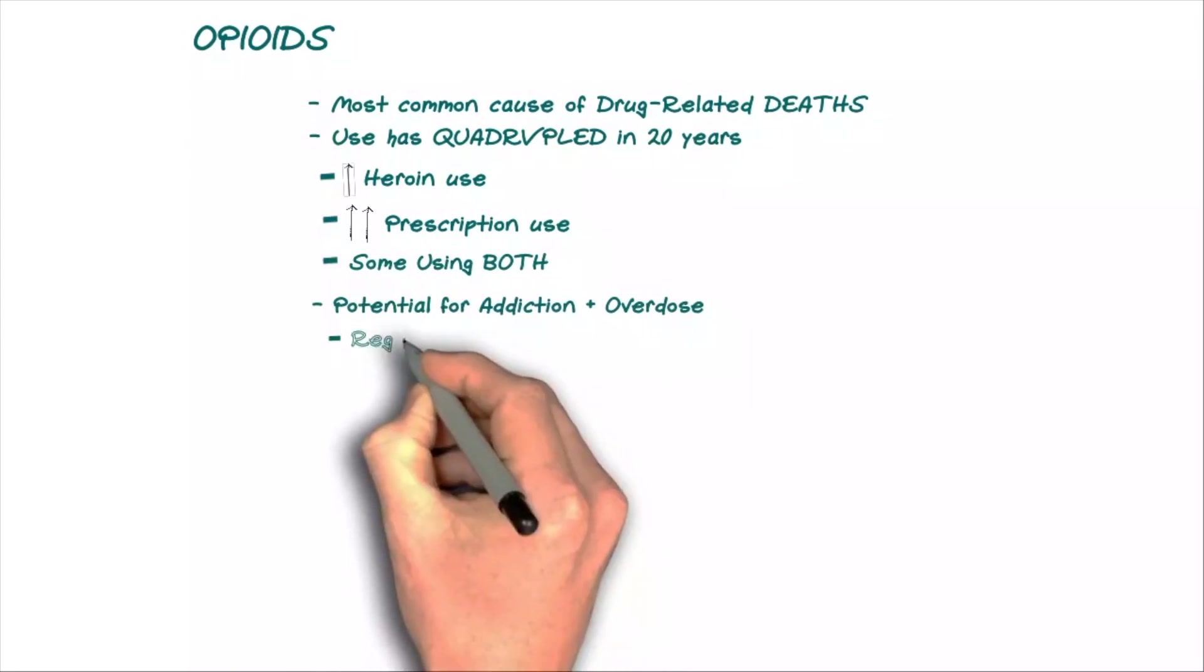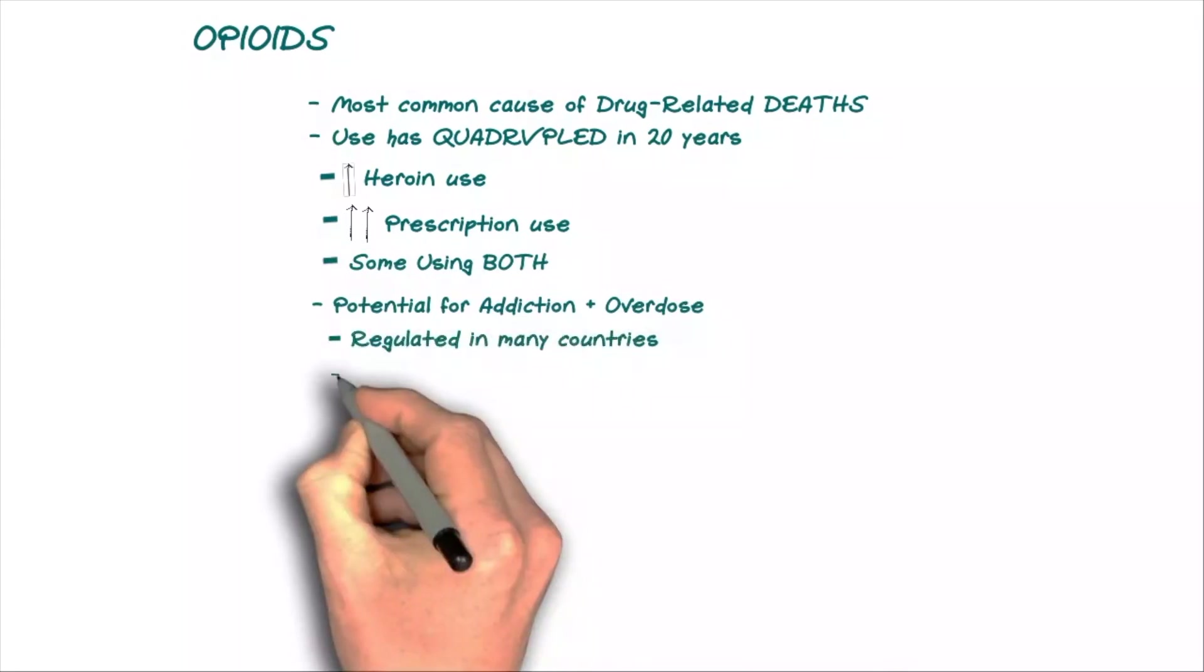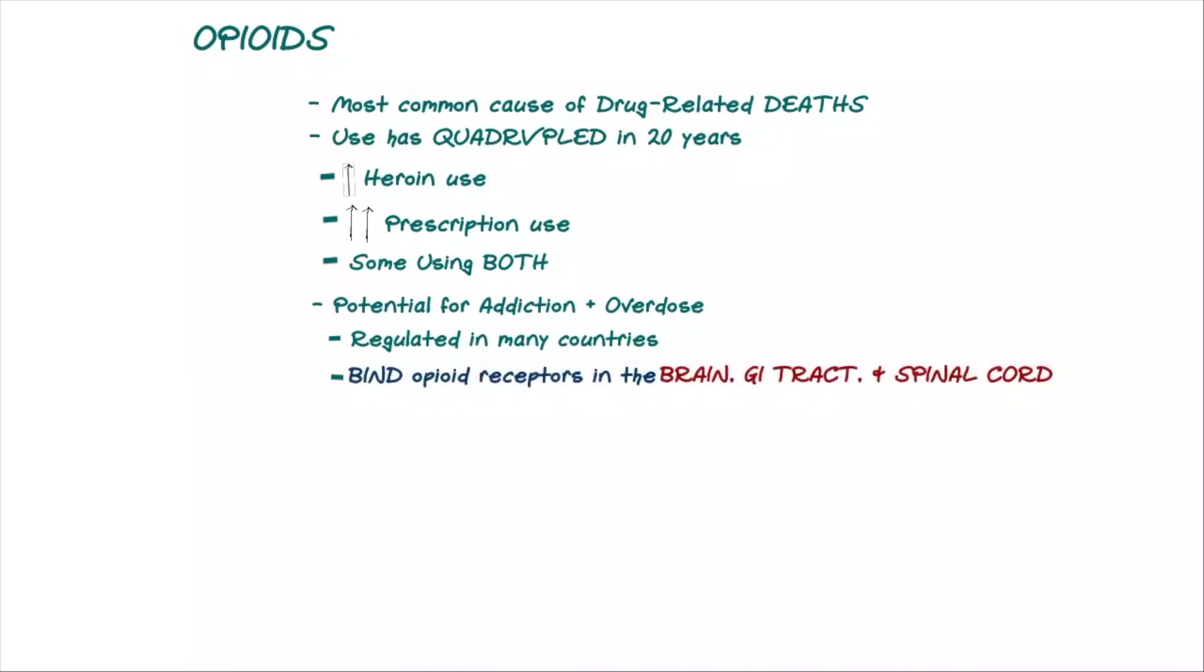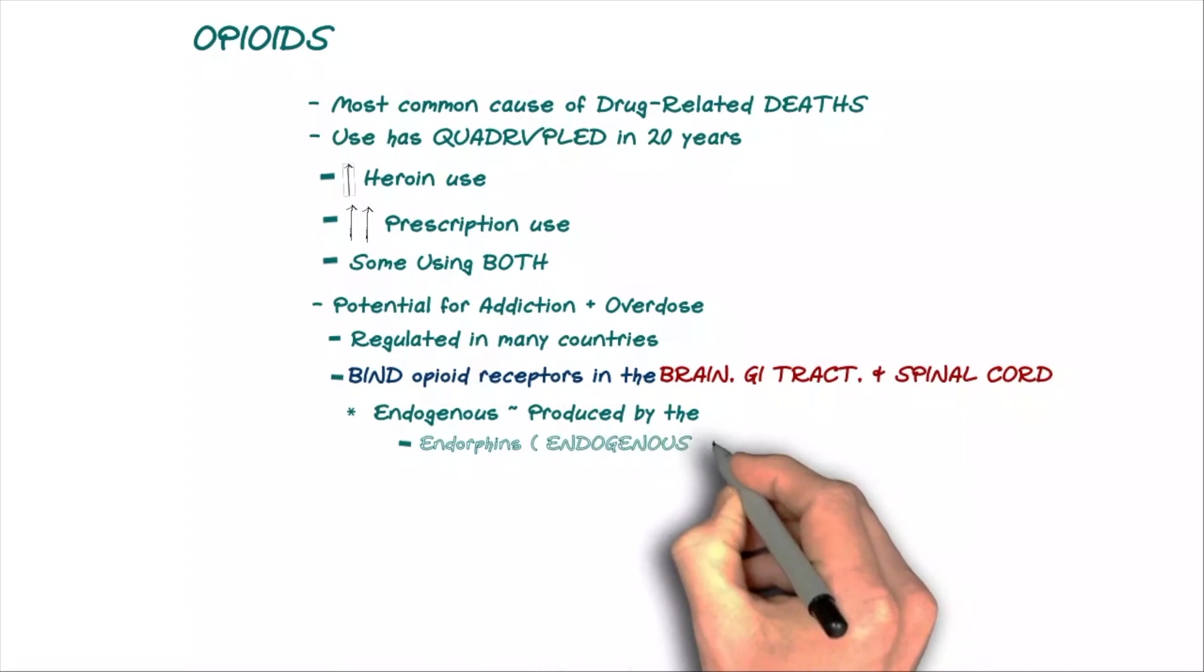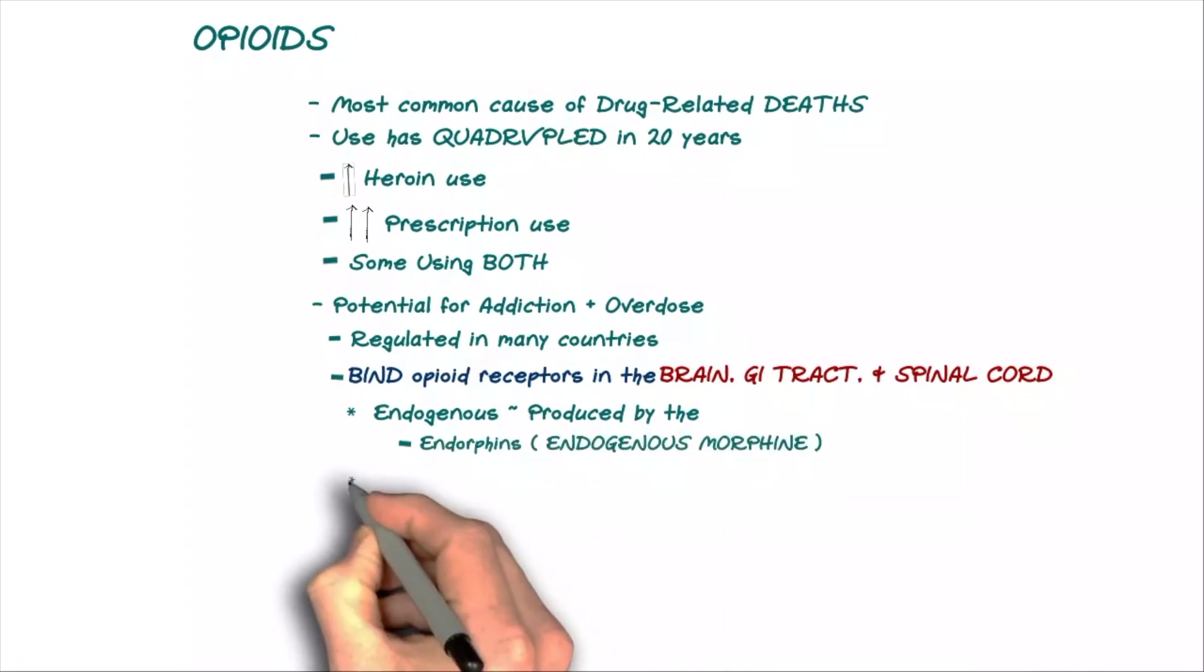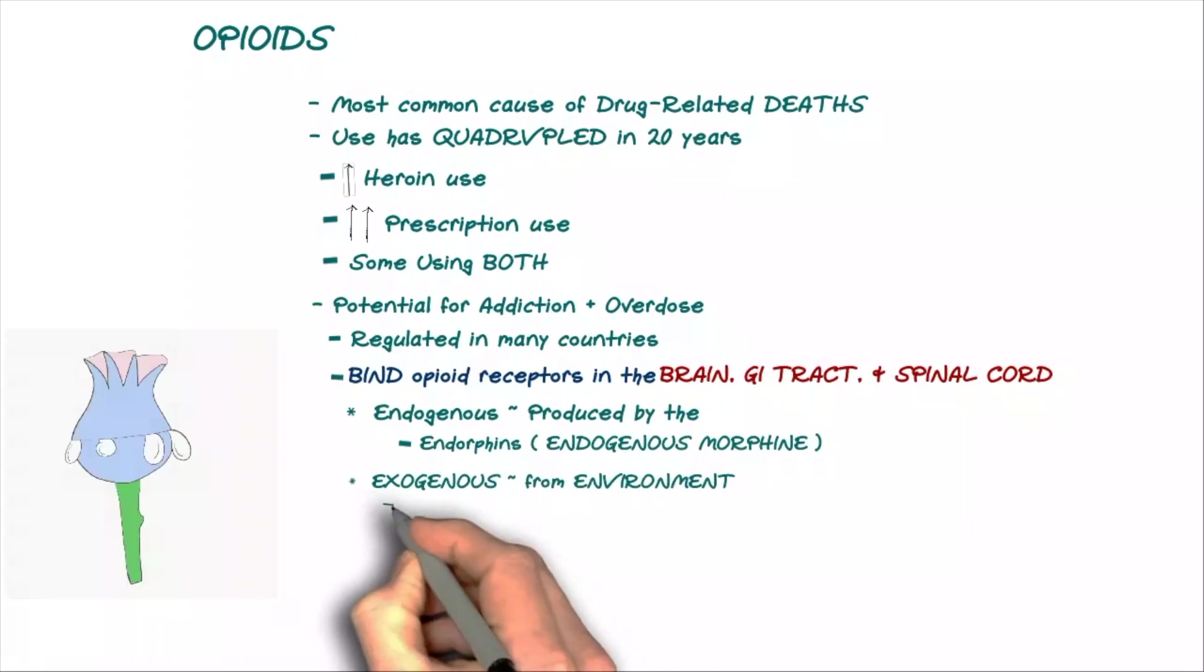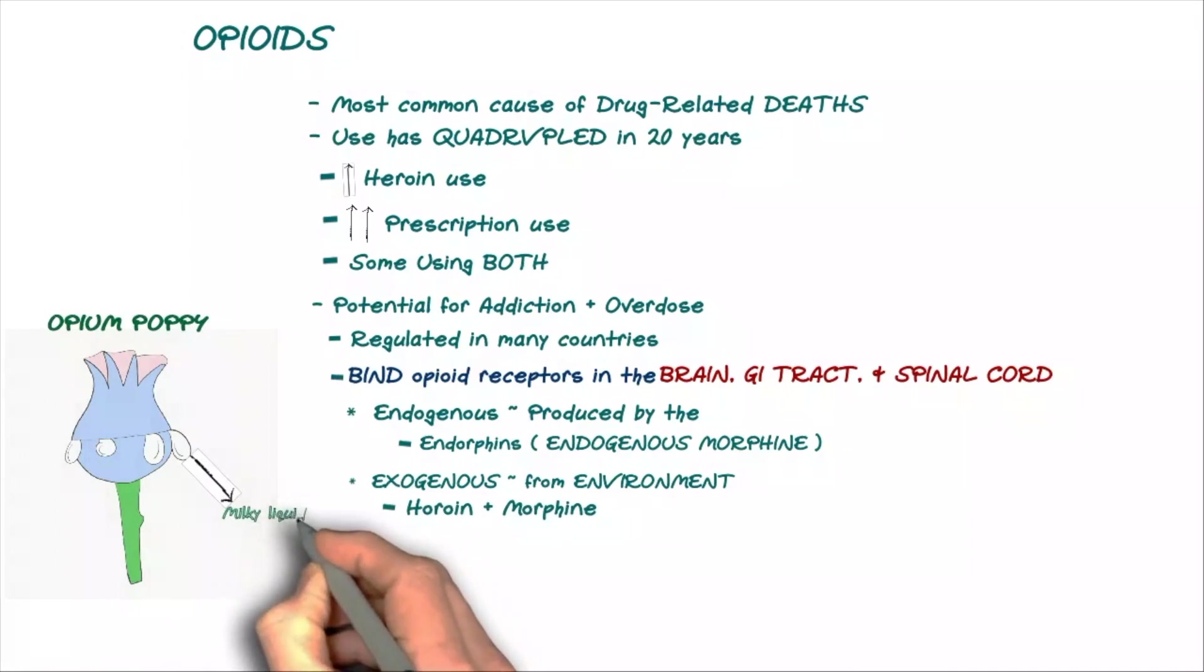As a class, opioids share one thing in common. They bind to opioid receptors in the brain, spinal cord and gastrointestinal tract. Some are endogenous, meaning that they are produced naturally by the body, like endorphin, short for endogenous morphine. But others are exogenous, meaning that they come from the environment, like heroin and morphine, because they come from the opium poppy, a flowering plant that oozes out a milky white liquid, while others like fentanyl are synthesized in the laboratory.